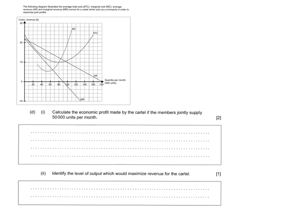D part 1 asks us to calculate the economic profit by the cartel, and we know that profit is equal to total revenue minus total cost. We don't have total revenue or total cost curves on the diagram, what we do have is average revenue and average cost. So we can form the equation as TR minus TC becomes AR minus AC times by Q. And reading off the diagram at 50,000 units a month, we can see that the average revenue is 16, and the average cost is 12.